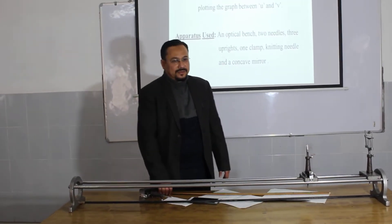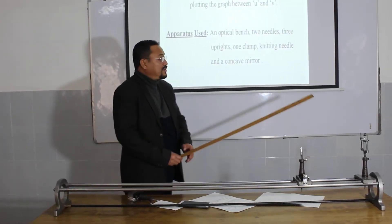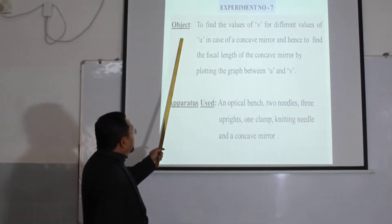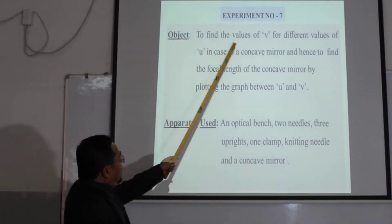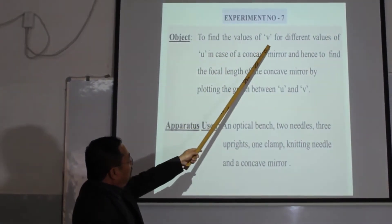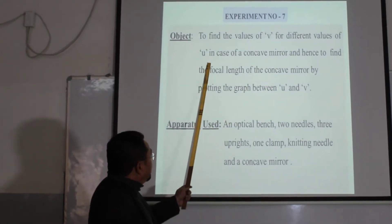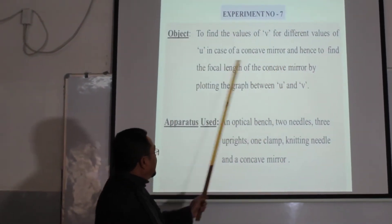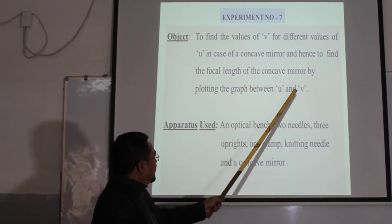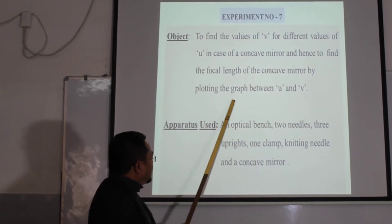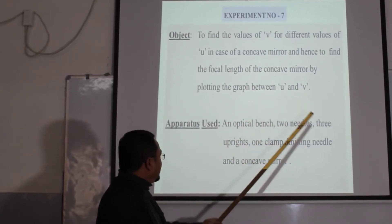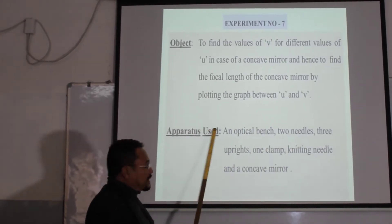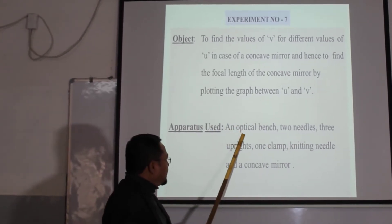Good morning students. Today I am going to demonstrate experiment number 7. The object of this experiment is to find the value of V for different values of U in case of a concave mirror, and hence to find the focal length of the concave mirror by plotting the graph between U and V. The apparatus you are going to use for this experiment is the optical bench.